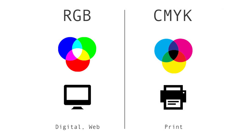Now that you are familiar with both color spaces, you should start to see how they're both quite similar, but at the same time kind of opposites to each other. With RGB, we're adding energy-based colors together, and by combining all of them we get white. With CMYK, we're subtracting pigment-based colors, and by combining all of them we get black.